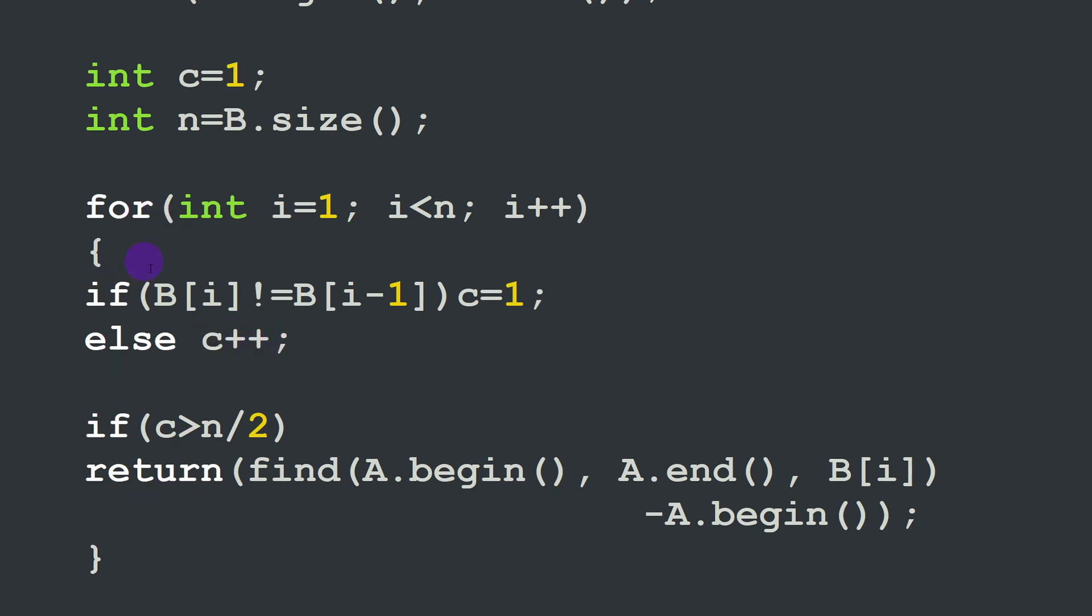Now during this scanning operation we are going to test if the number of occurrences is greater than half the size of the array, meaning greater than N over two. If this condition is true it means that we have just found our dominator element.